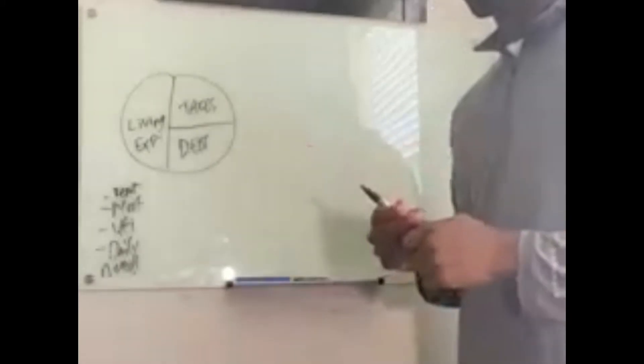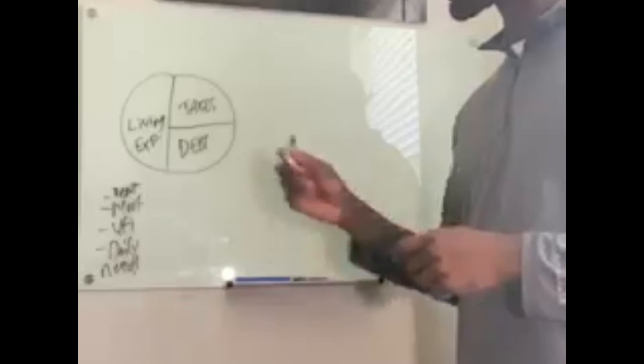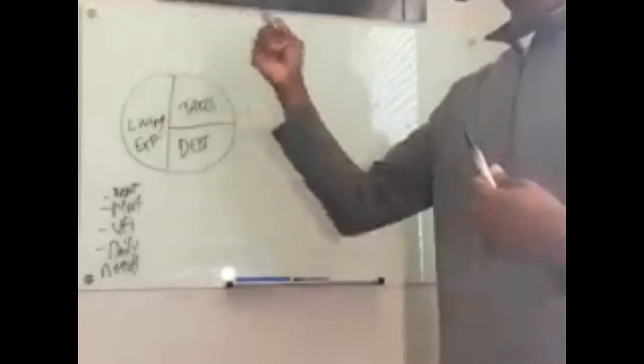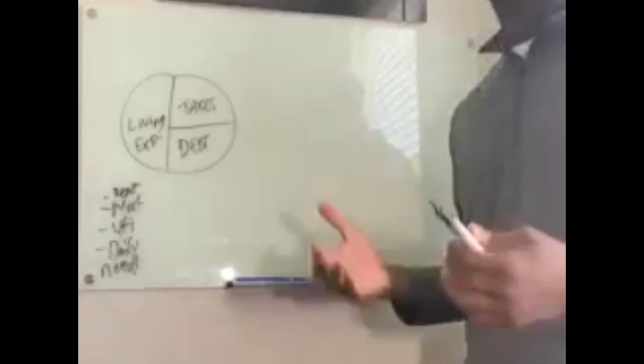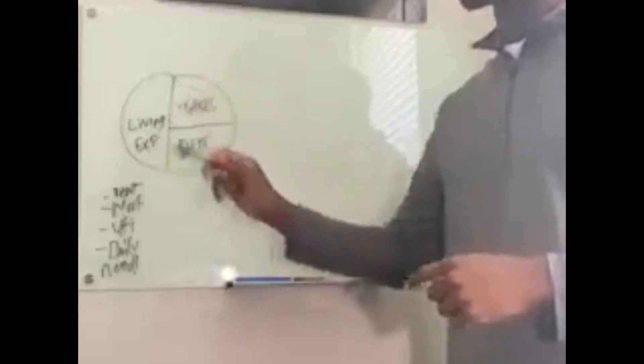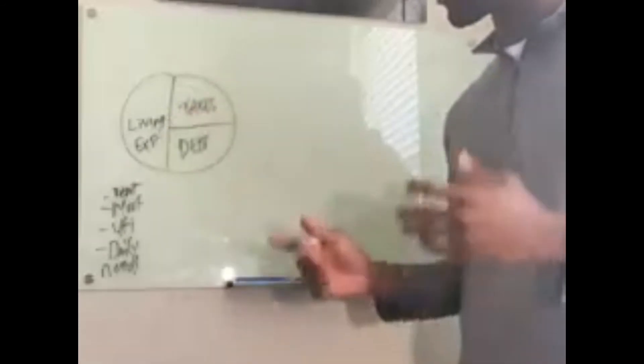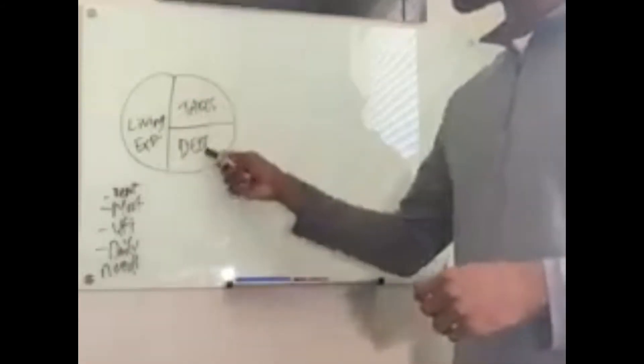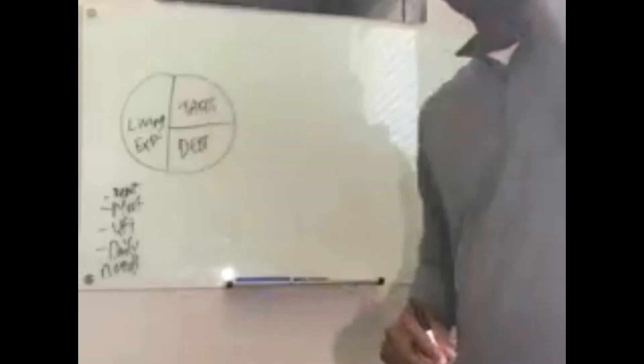Control the controllables. You didn't know that you can control taxes a little bit. My firm can teach you and educate you on how to control the controllables with your taxes. Obviously, you're going to have living expenses. That's a given. There's ways you can diminish that too. That's not what we're here for at the moment. We're going to talk about these two.